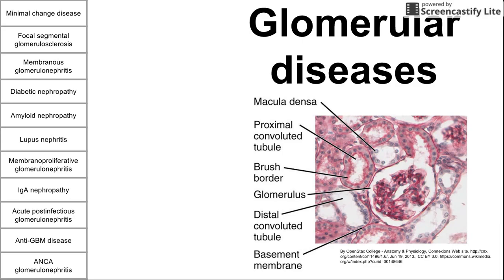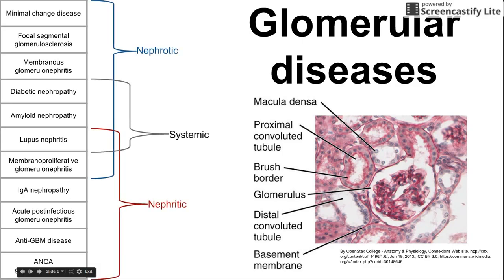Before we begin with the diseases, we can break them up into a few sections to help us remember them. We have the nephrotic diseases — diseases that show nephrotic symptoms — which helps you identify and organize them. We have the nephritic diseases. And in the middle, we have diabetes, amyloid, and lupus, which are primarily systemic diseases but have some glomerular manifestations. We're going to talk about the effects of those systemic diseases on the glomerulus.